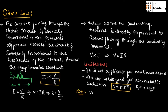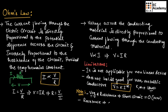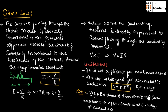We need to note that the voltage and resistance across a short circuit will be equal to zero, and the resistance of an open circuit will be equal to infinity. The current of an open circuit will also be equal to zero.